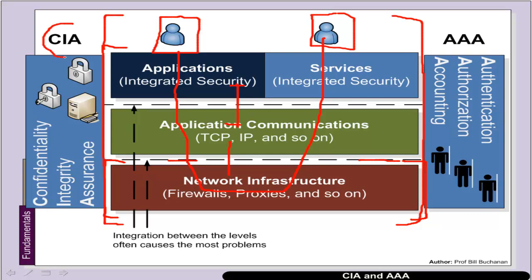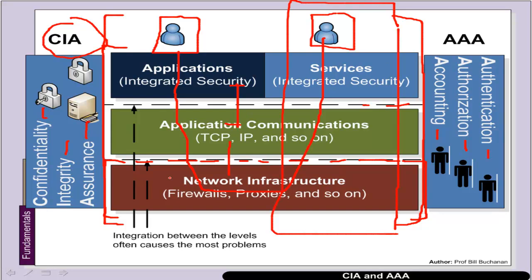Some of the key principles for this are CIA — confidentiality, integrity and assurance — and we also get AAA, which is authentication, authorization, and accounting. The main issue is typically how to keep these interfaces secure and make sure that the overall system is kept secure and integrated. A focus on one area may leave some weakness in another area.